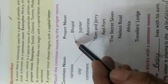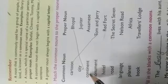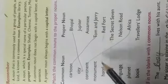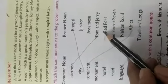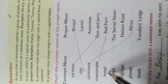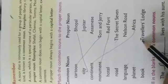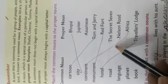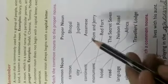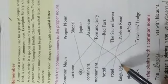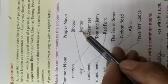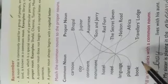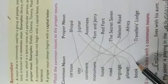Continent को Africa से मिलाएंगे। Monument — Red Fort is our monument। Hotel को Traveller Lodge से मिलाएंगे — यह hotel का नाम होगा। Road को Nelson Road से मिलाएंगे। Language — यहाँ पर दिख रही language असमिया — इसको join करेंगे। Planet — Jupiter is our planet, so we will join here. Book — Secret 7 — यह book का नाम हो सकता है। तो common noun से proper noun में हमने matching किया है।